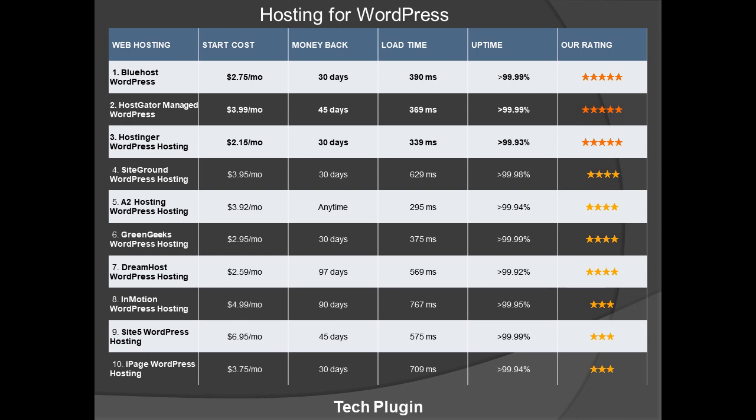Another option is HostGator Managed WordPress at $3.99 per month, with a 45-day money-back guarantee, 369ms load time, 99.99% uptime, and a 5-star rating. Other hosting options include SiteGround, A2 Hosting, GreenGeeks, DreamHost, InMotion, Site5, and iPage. A2 Hosting offers a money-back guarantee at any time you want.